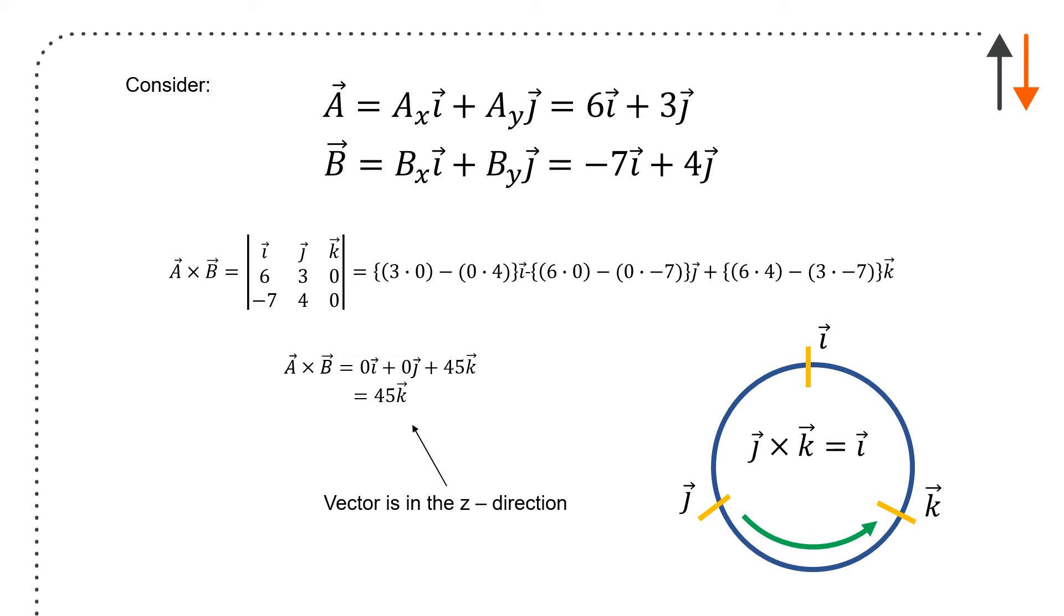Now, a useful tip is that if you draw a circle like this with I, J, and K as shown, if you do J cross with K, you'll get I. On the other hand, if you do K cross with J in the opposite sense, and in the negative alphabetical order, you get a negative I. And so that's kind of a useful rule to keep in your head as you're thinking about how these things work.